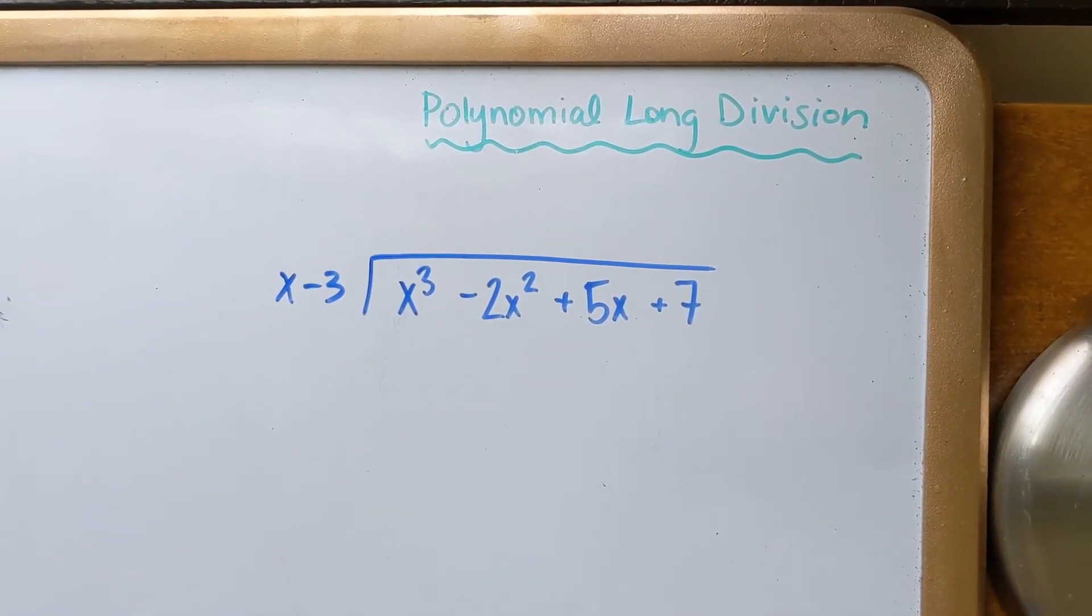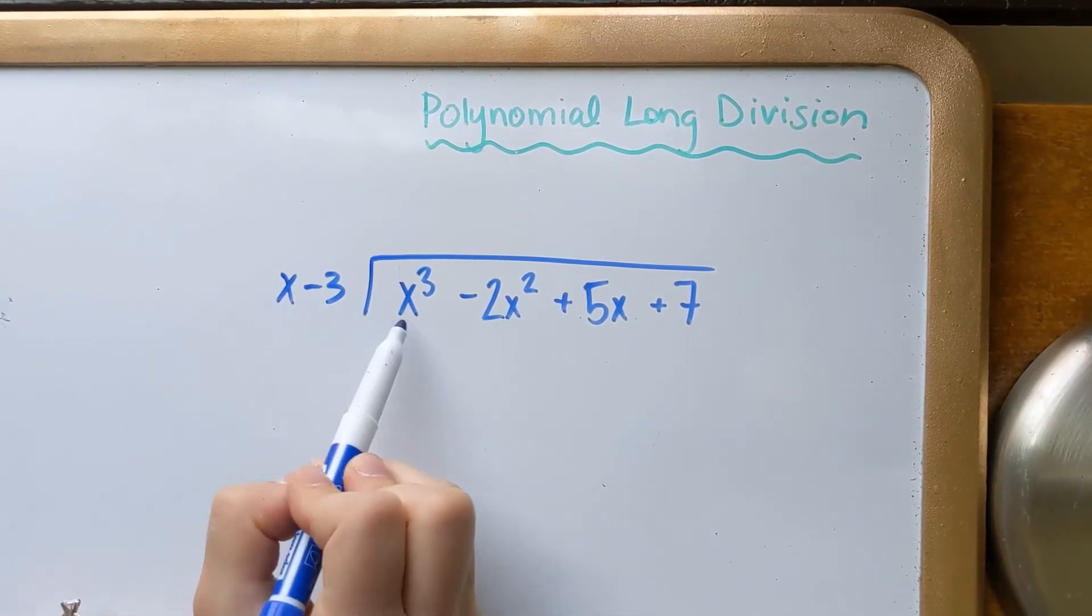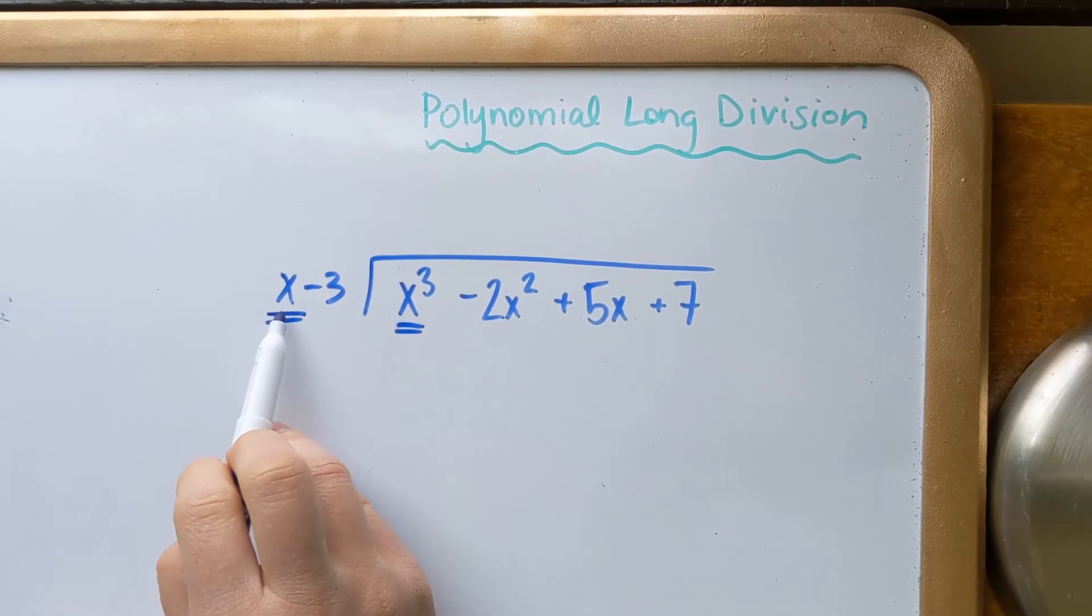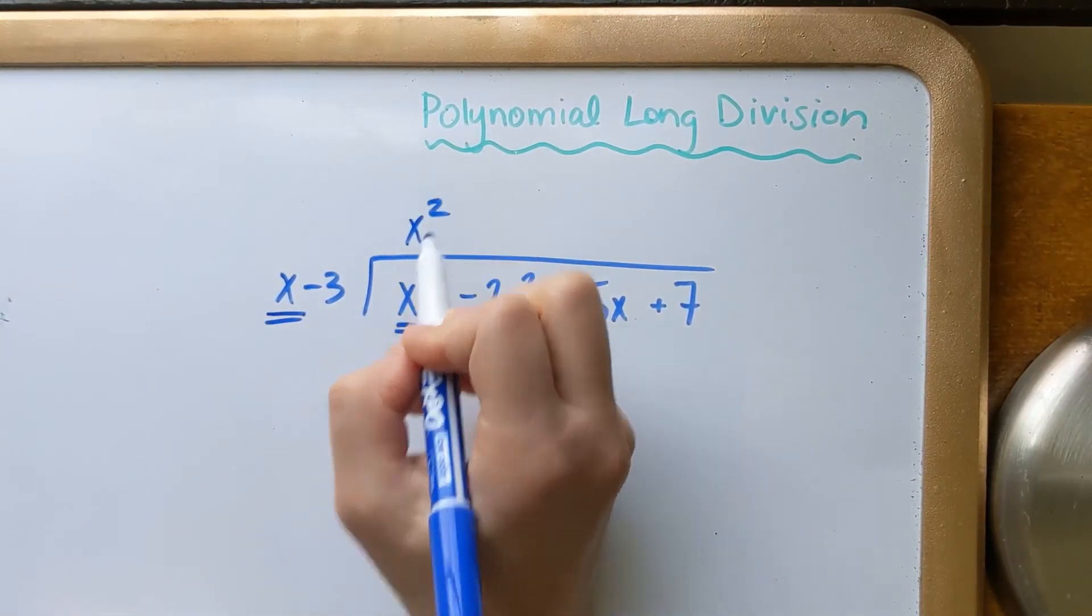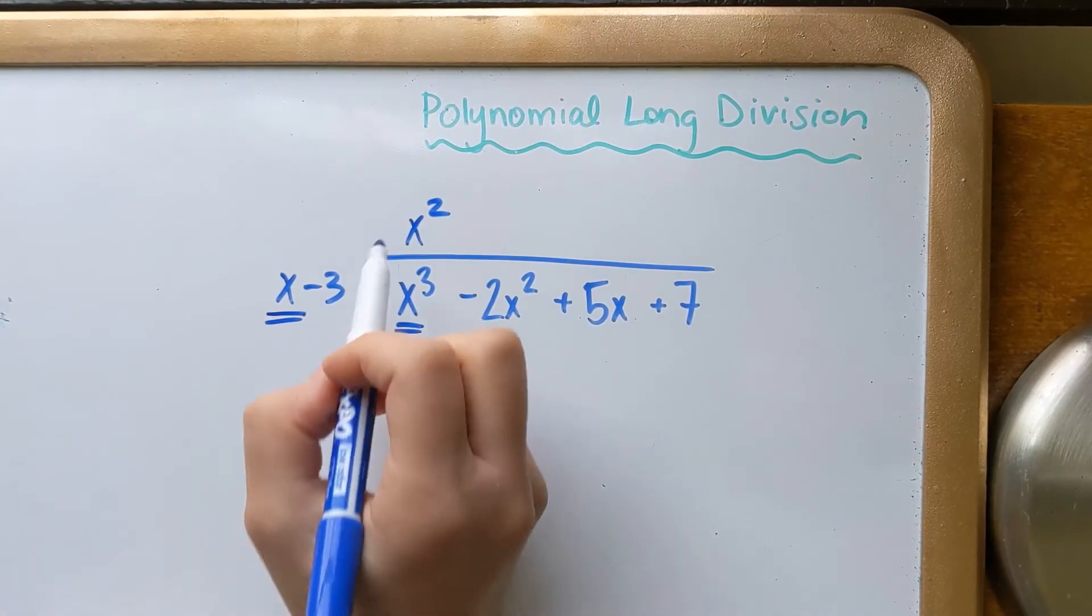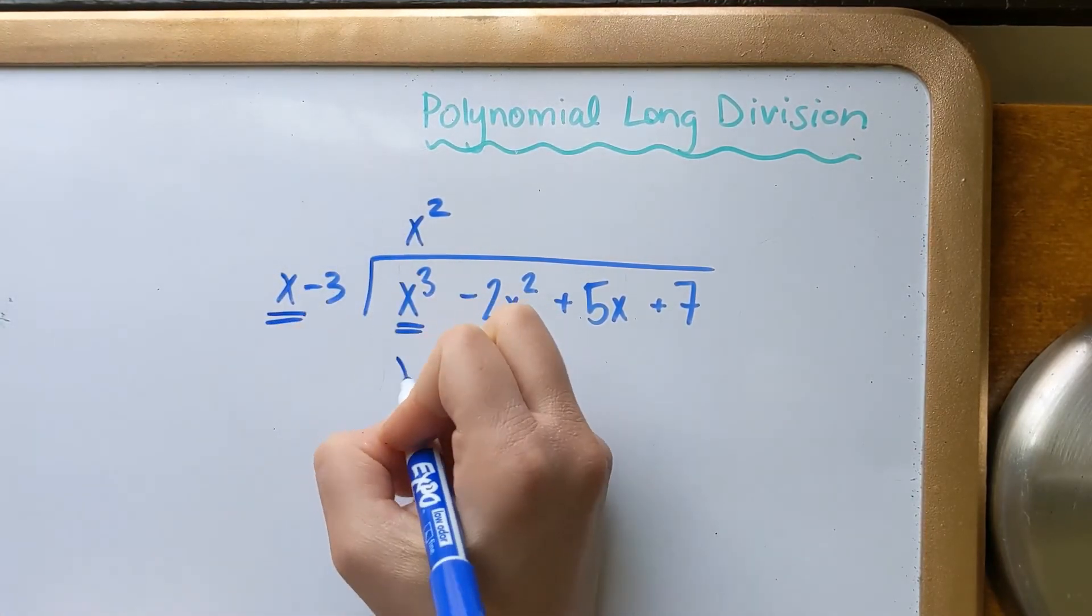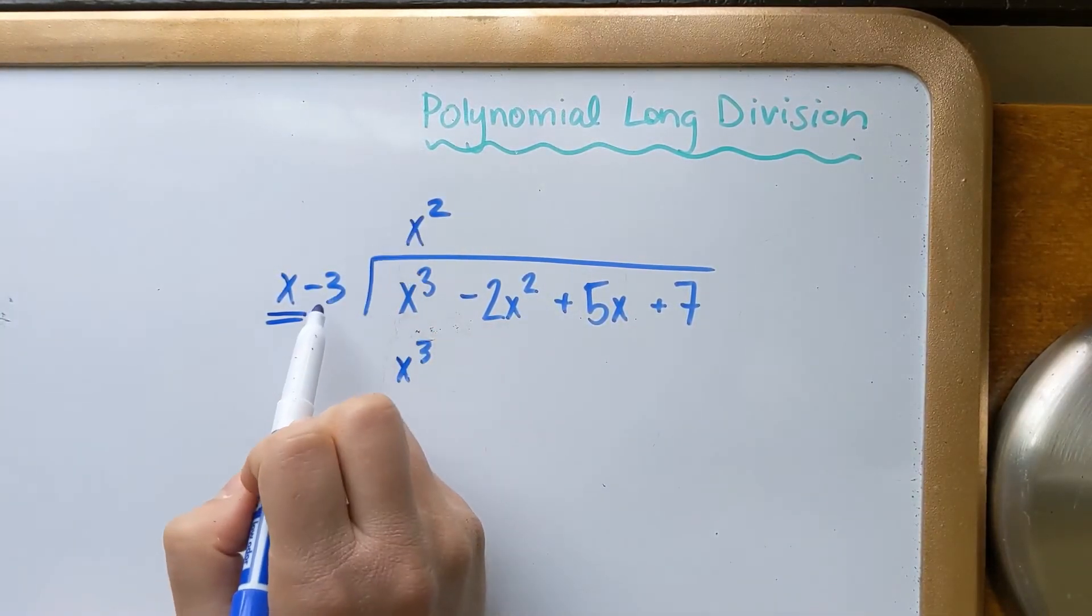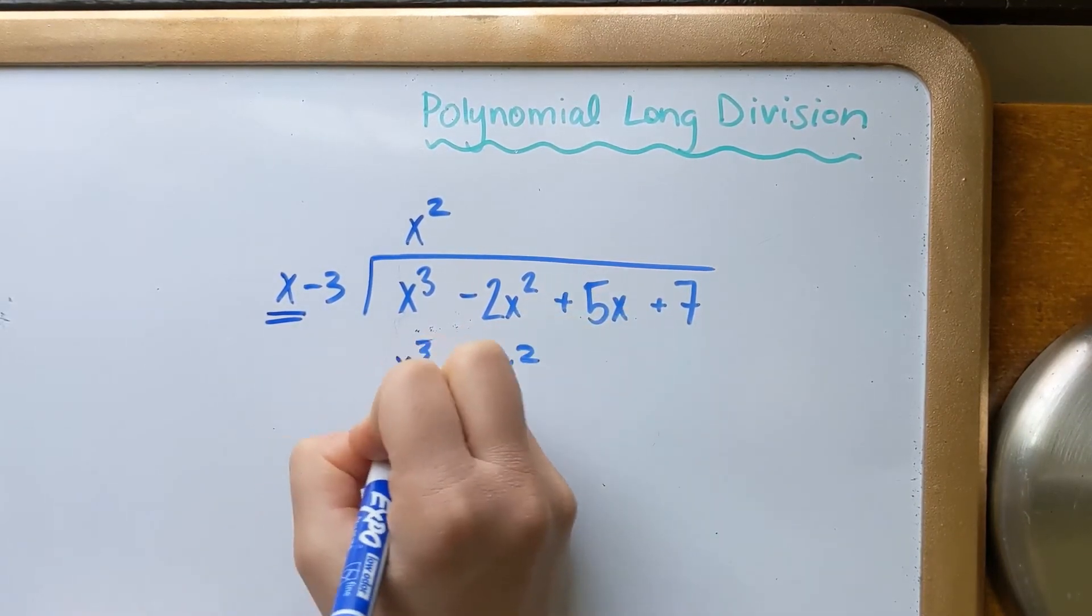Okay, here we go with a problem that will have a remainder. So like before, we are just concentrating on the first terms here. What do I multiply x by to get x cubed? The answer to that is x squared. I would multiply it by x squared. And I'm going to redistribute. x squared times x is x cubed. Let me just get rid of that there. x squared times negative 3 is negative 3x squared.